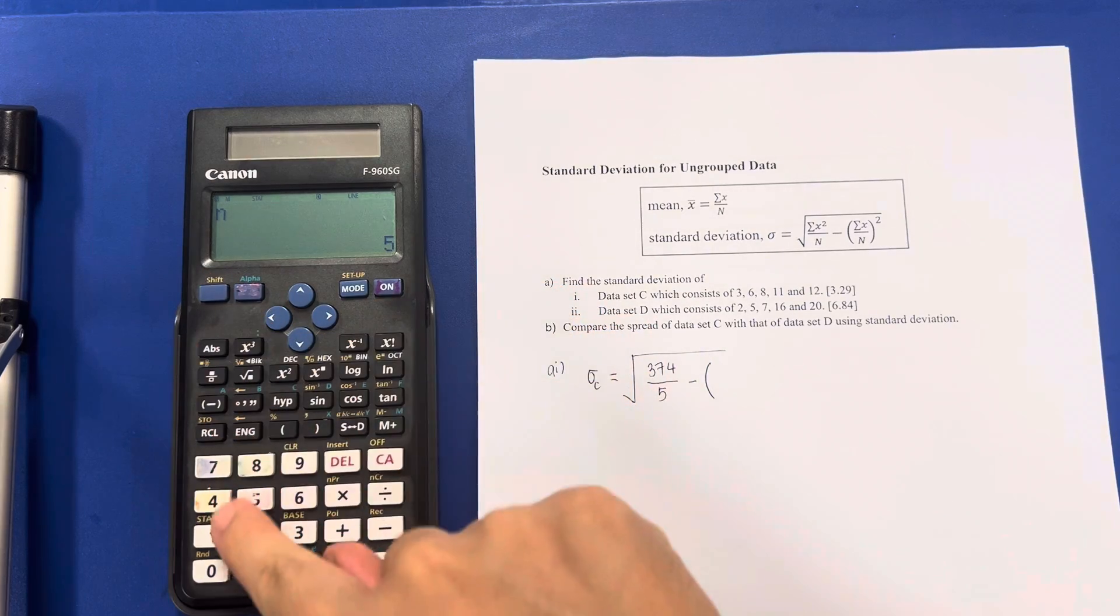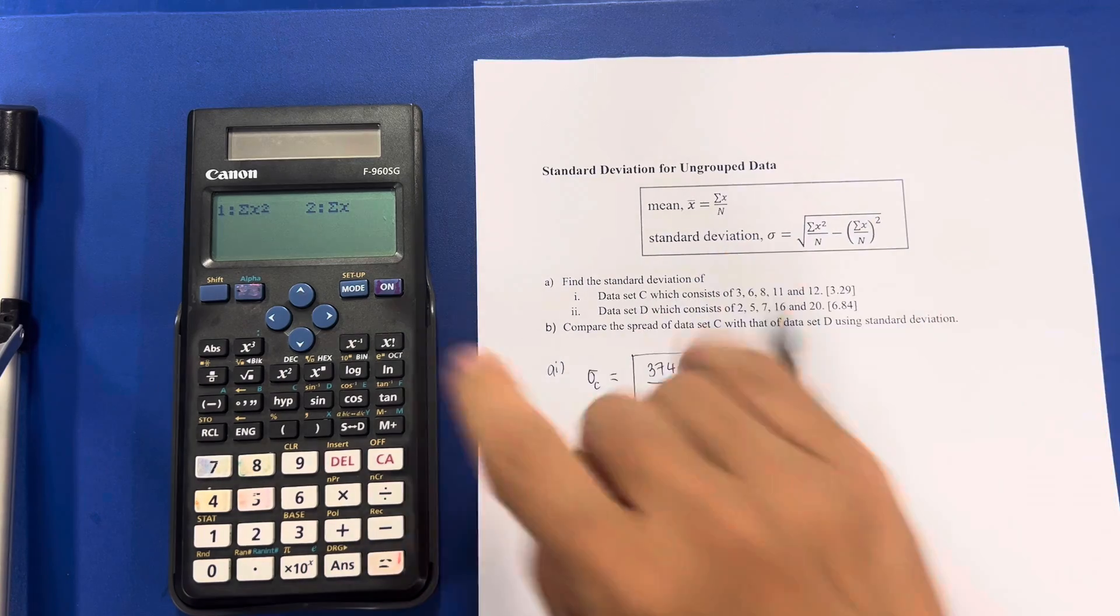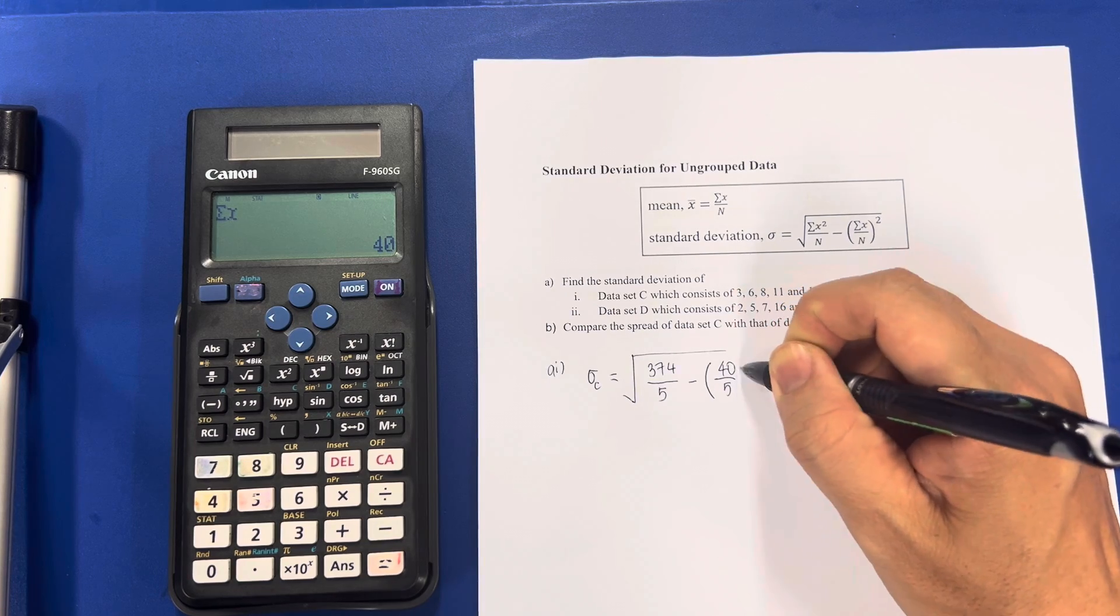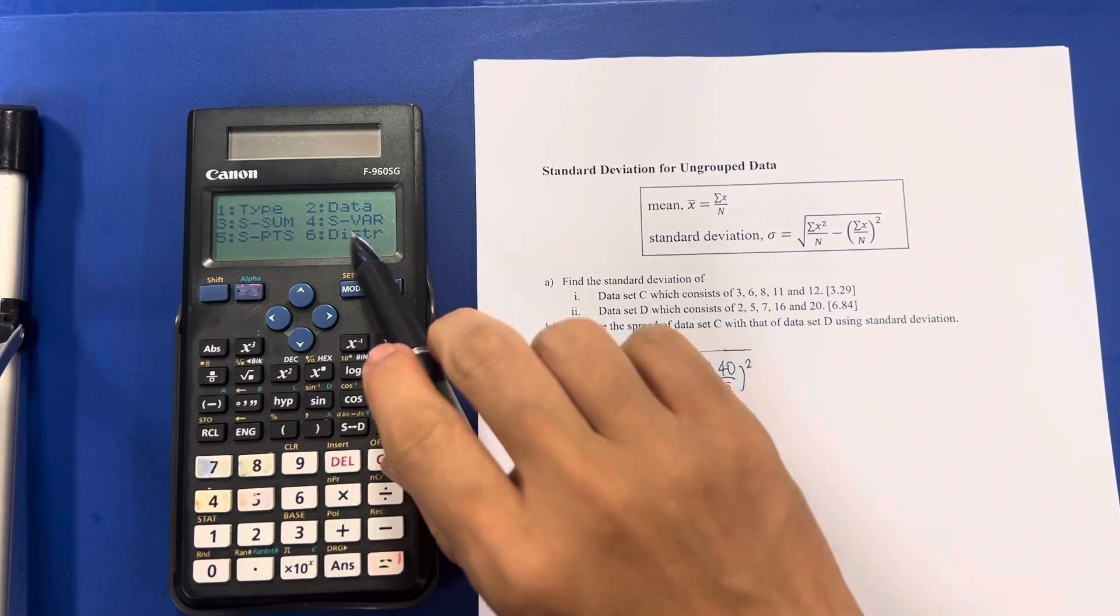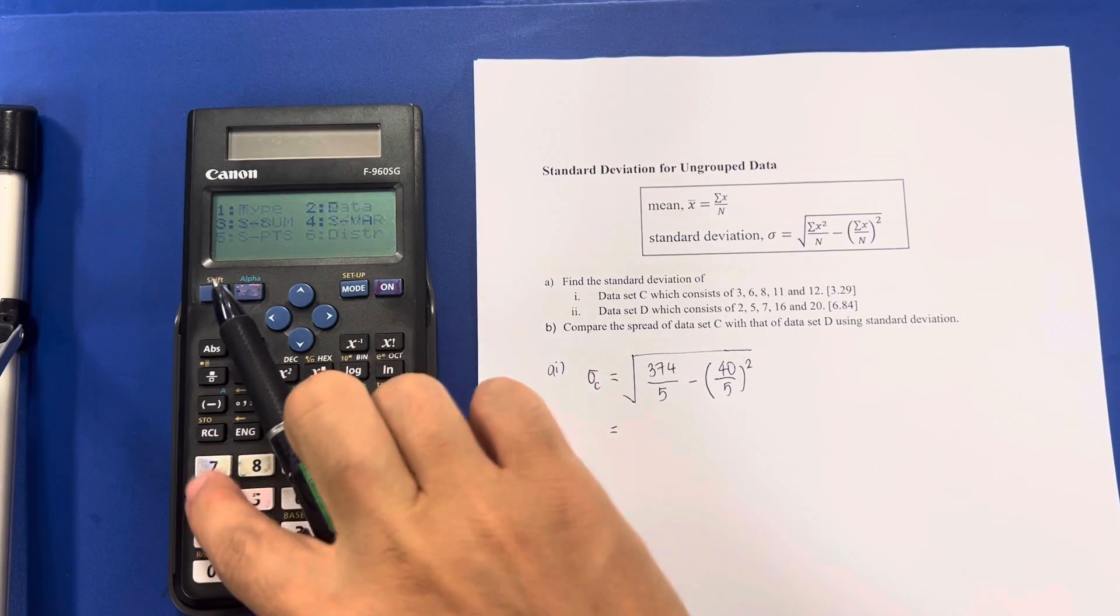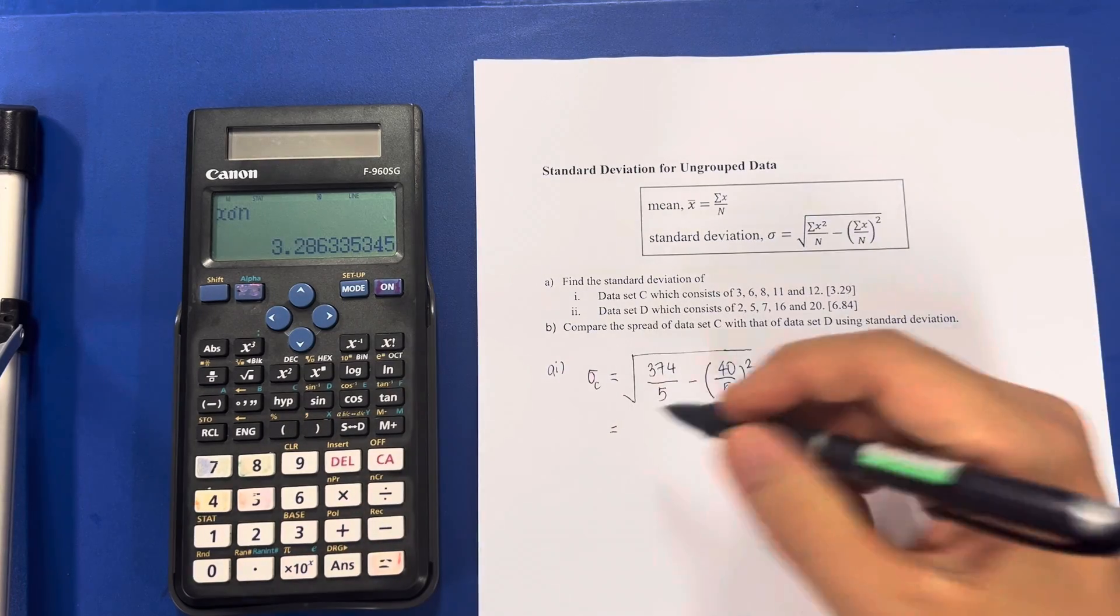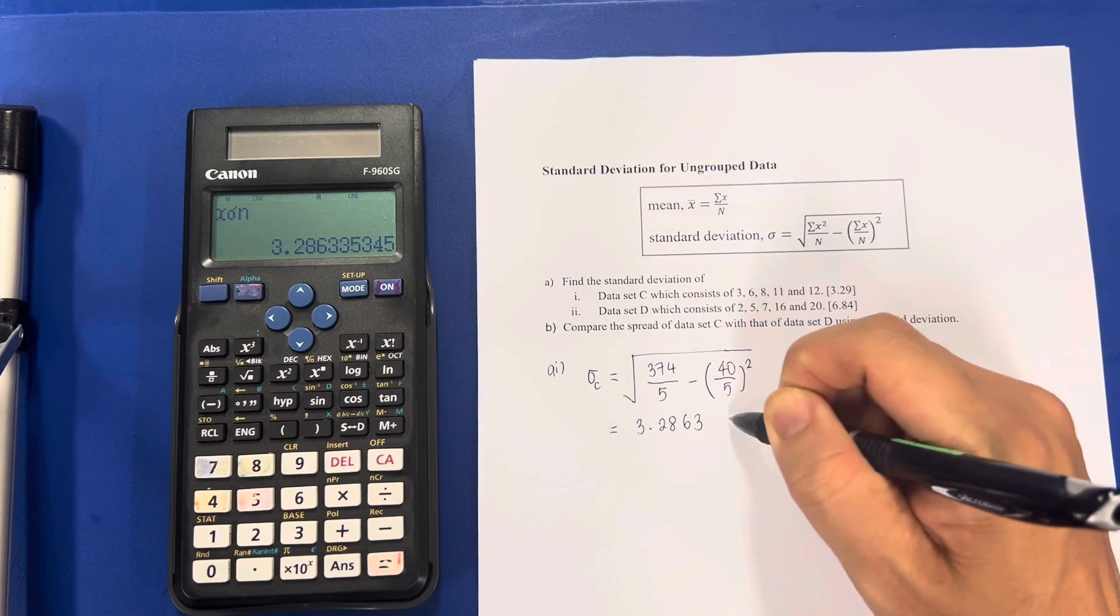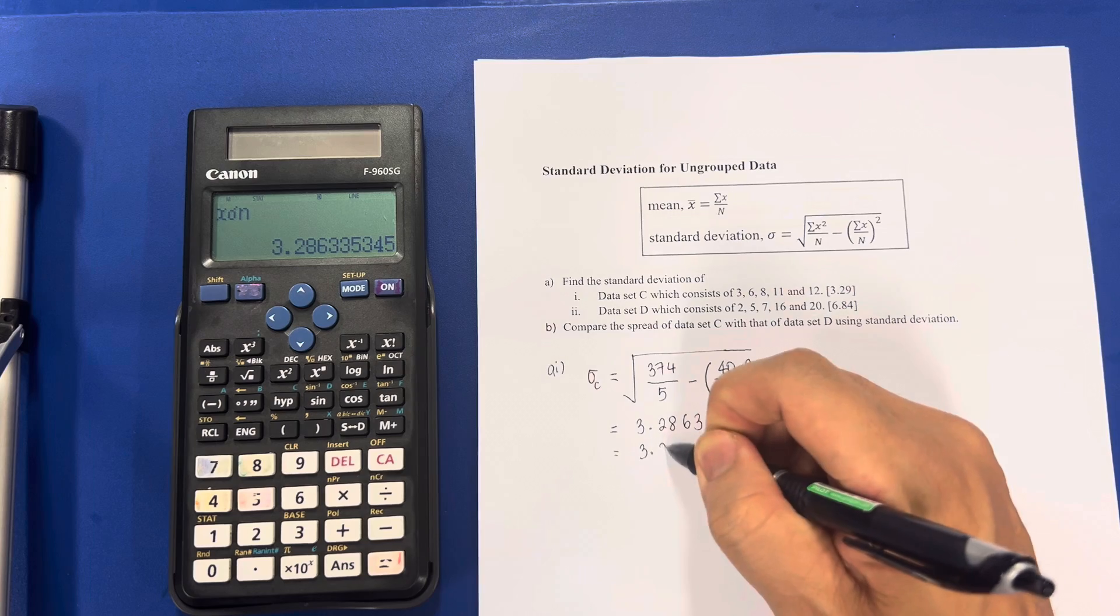Minus SHIFT, 1 again. The sum. But this time around, I want the X. 40. N is still 5. Make sure the square root is all the way here. And after which, SHIFT, 1 again. Number 4. Because number 3 here, this is our variant. 3.2863 to 5 significant figures. Final answer will be good to leave it in 3 significant figures.